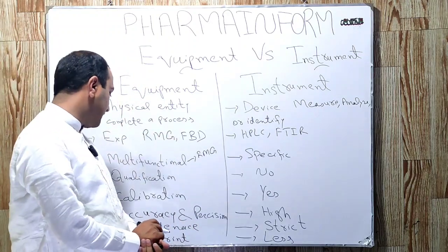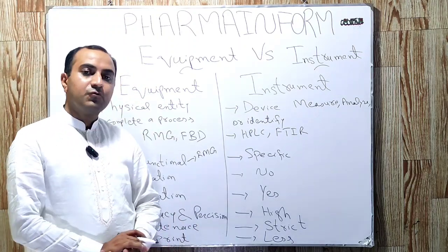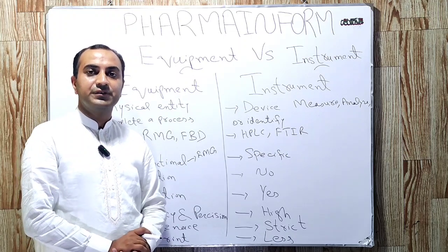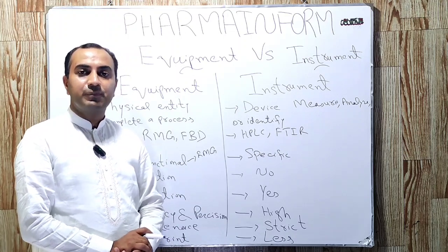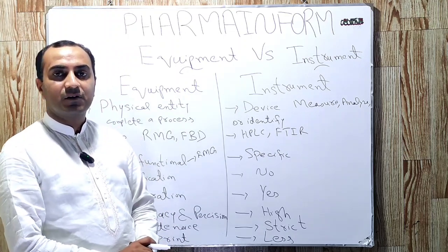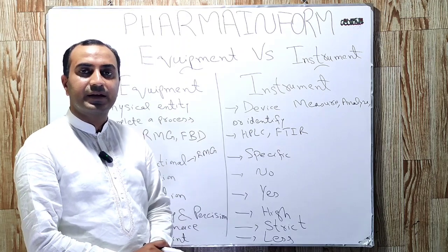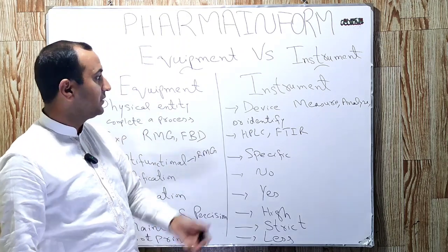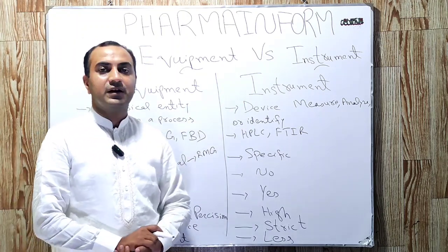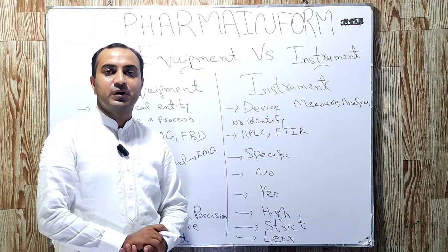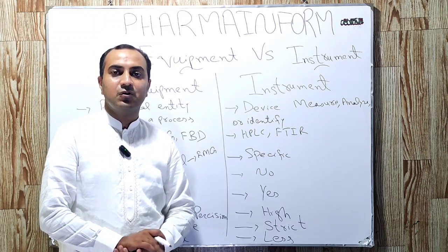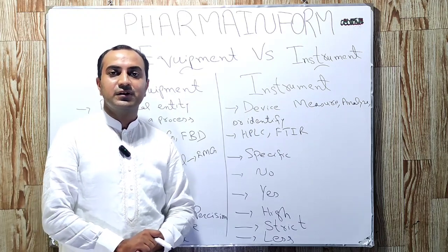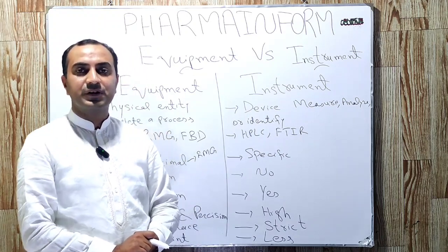The next difference is footprint, meaning space occupancy. Equipment are large in footprint and occupy more space, while instruments are small and occupy less space.